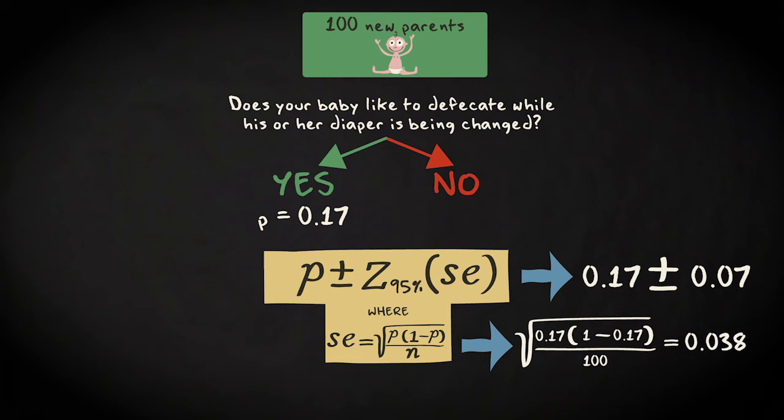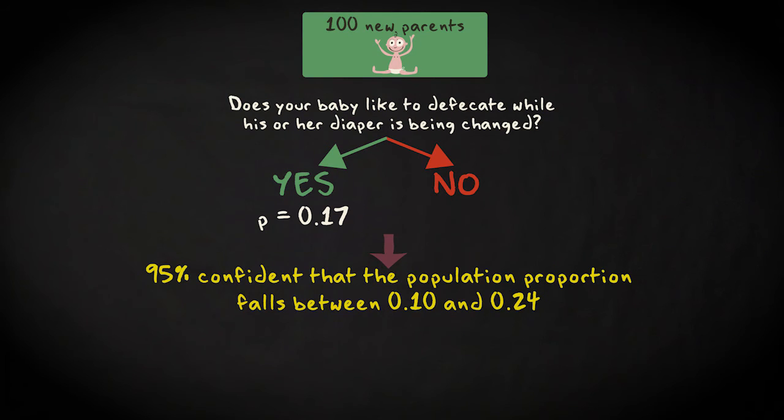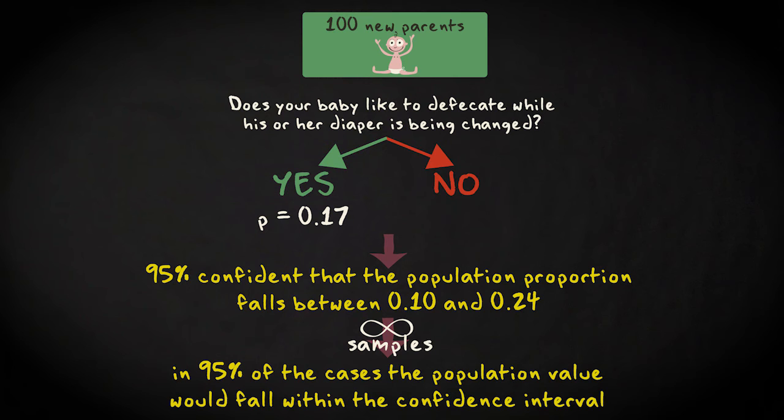0.17 minus 0.07 equals 0.10 and 0.17 plus 0.07 equals 0.24. So our confidence interval ranges from 0.10 to 0.24. This means that we can be 95% confident that the population proportion falls between 0.10 and 0.24. In other words, if we would draw an infinite number of samples with n equals 100 from a population, and for every sample we would compute the confidence intervals with this margin of error, in 95% of the cases the population value would fall within the confidence interval.